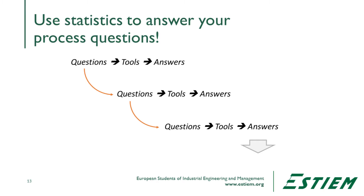So what is statistical thinking? It's a process. We begin by asking questions. We identify tools, methods, and activities that will deliver us answers. Then we go to the next level of detail and we have more questions, and the next level of detail. Finally we get to what we could say is a root cause. And when we affect that, we can actually have permanent change in the process.